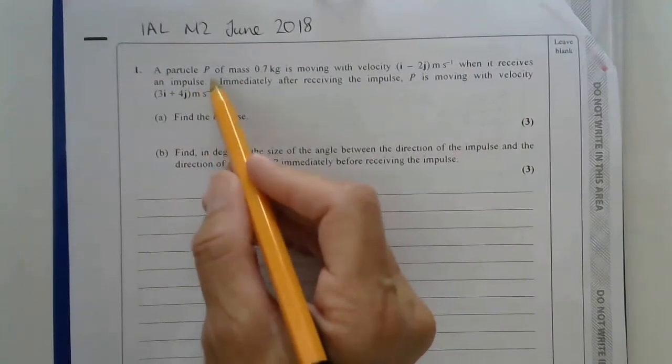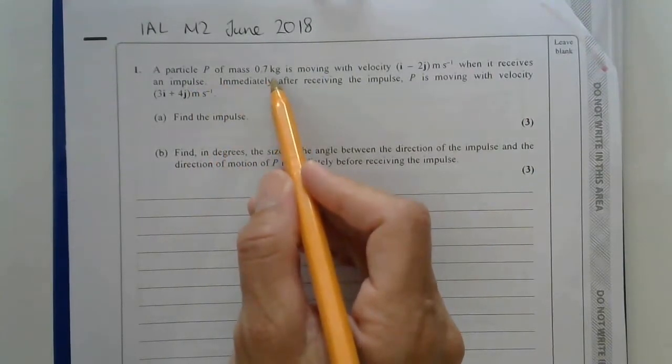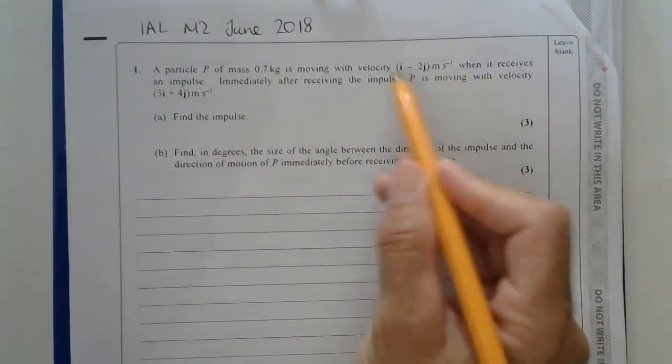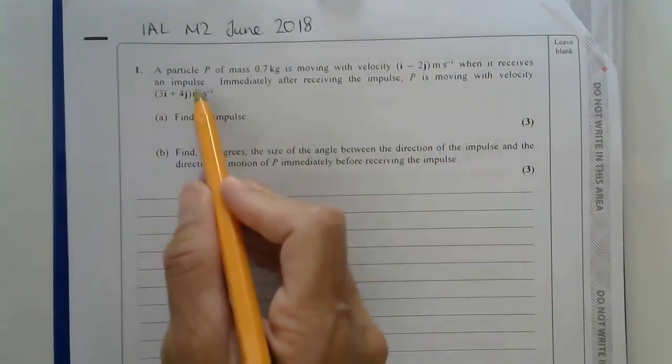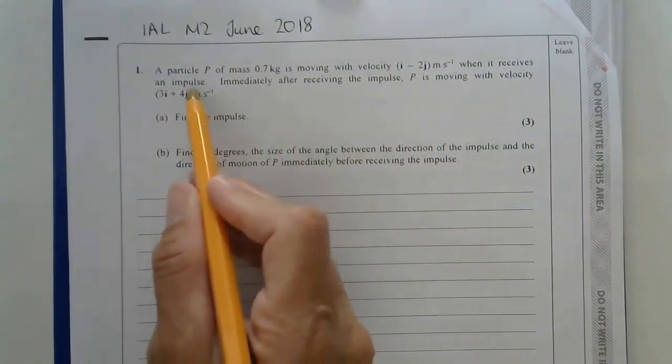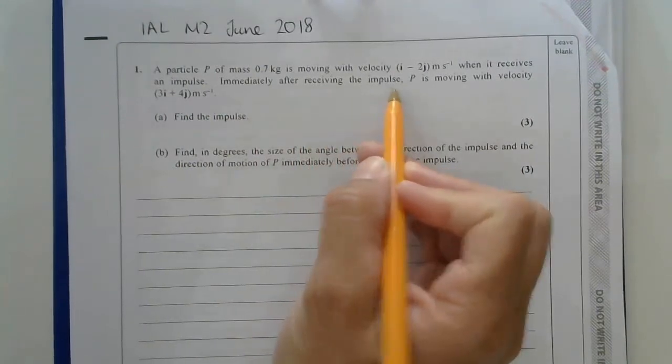We have a particle P of mass 0.7 kilos moving with this velocity when it receives an impulse, so in other words a hit.